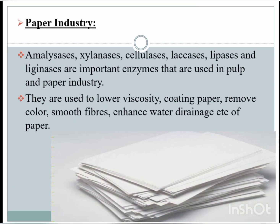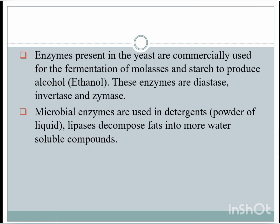In the paper industry, amylases, xylanases, cellulases, laccases, lipases, and ligninases are important enzymes used in pulp and paper manufacturing. They are used to lower viscosity, coat paper, remove colors, smooth fibers, and enhance water drainage. This shows how enzymes are very important for many processes going on in industry.